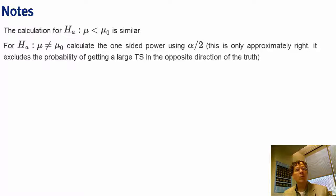And this is only approximately right. It omits a small component of power, but that component of power is only meaningful if mu_a and mu naught are close together.